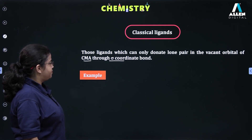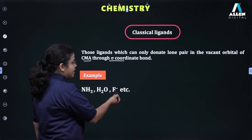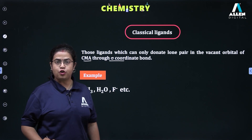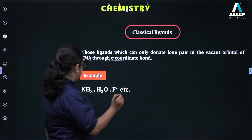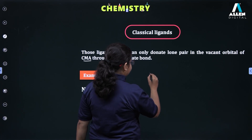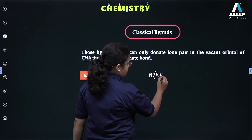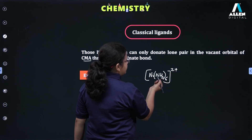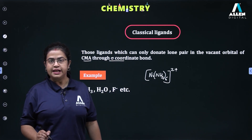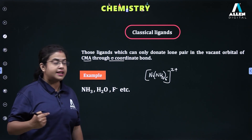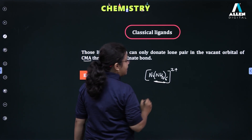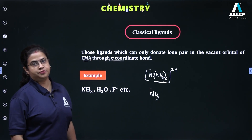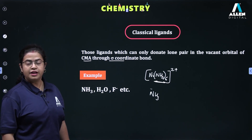Examples of classical ligands are ammonia, water, and F⁻. All these ligands behave as electron pair donors. For example, in the complex [Ni(NH3)6]²⁺, the vacant orbital of Ni²⁺ is accepting electrons from the ammonia ligand. Ammonia is a neutral ligand where nitrogen is the donor atom.